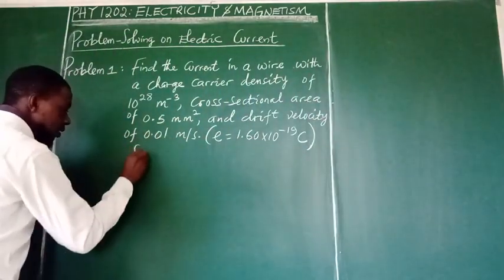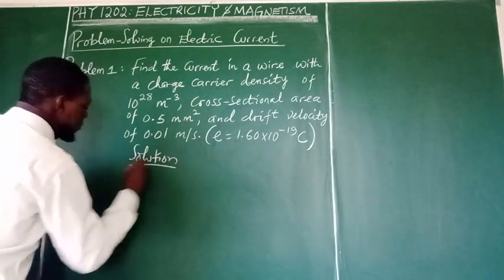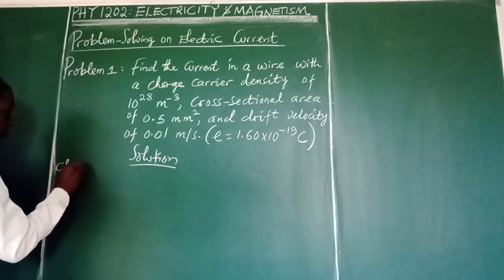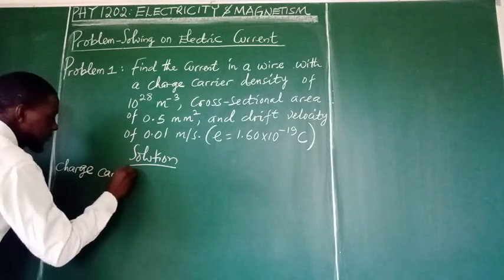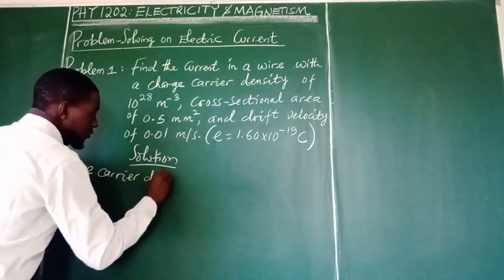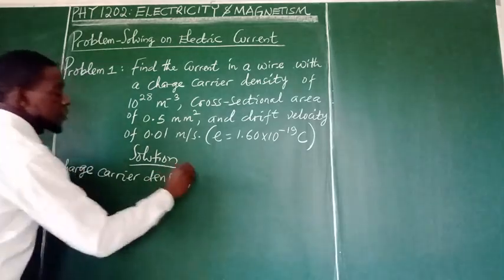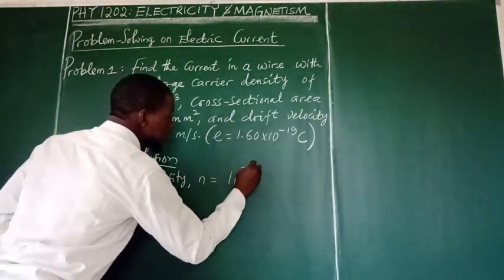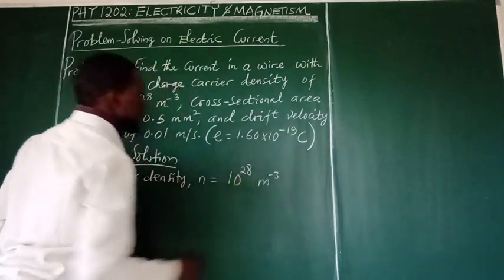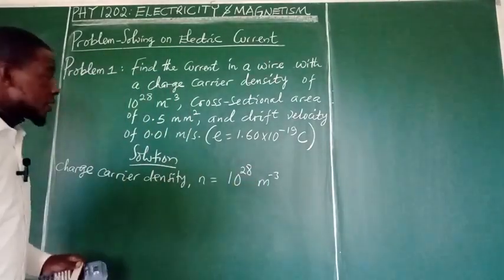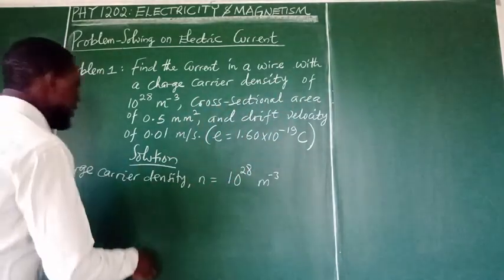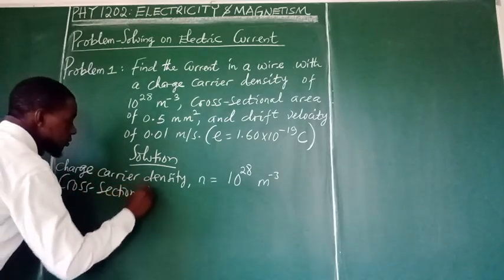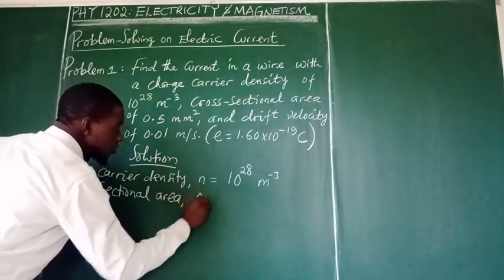So we got the first parameter. We are going to say solution. Our first parameter is charge carrier density, and this is denoted by small letter n.